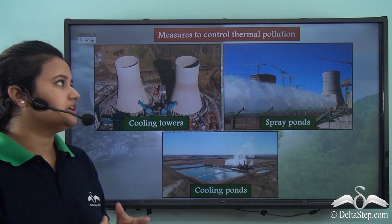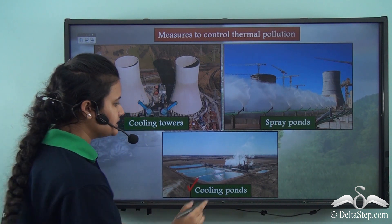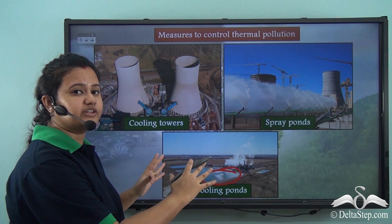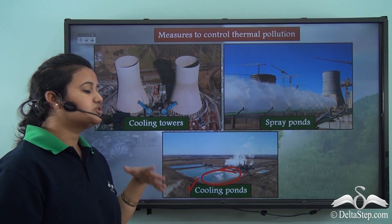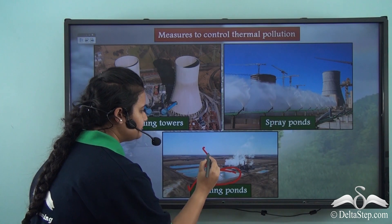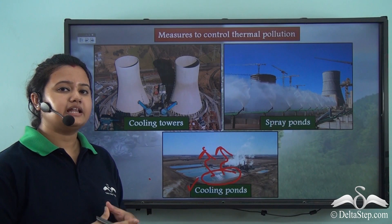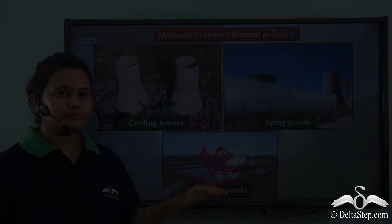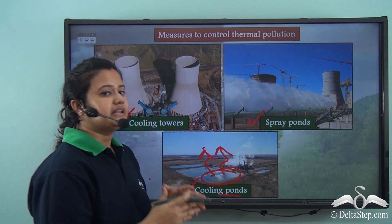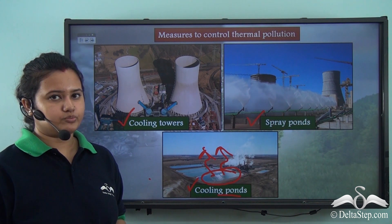There is yet another measure to control thermal pollution — installing cooling ponds. In cooling ponds, the overheated water is released onto a large pond. Since the surface area of these ponds is large, heat dissipation is also more — that is, excessive heat is released from the surface into the atmosphere. So cooling ponds also help to reduce the temperature of overheated water before it is released into water bodies.